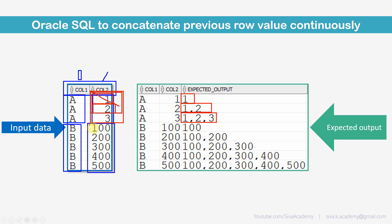The same logic applies for group B. In the first row of B we just print 100. In the second row we print 100 and 200. In the third row we include 100, 200 and 300, and similarly for the rest of the records.